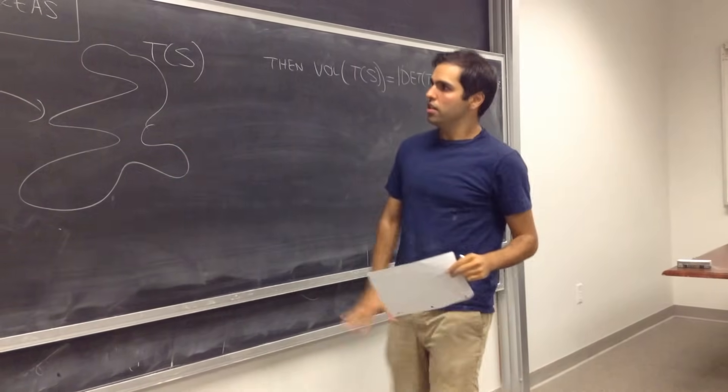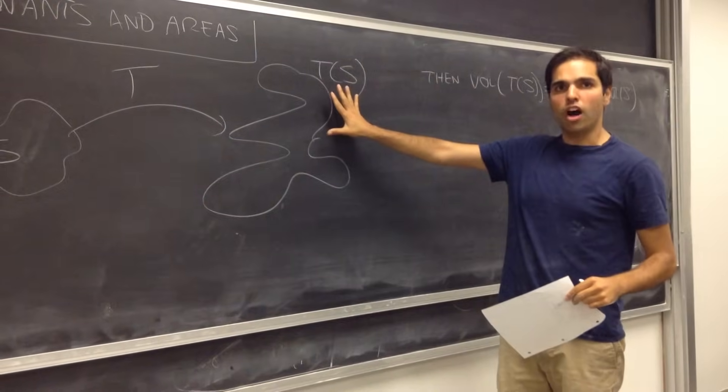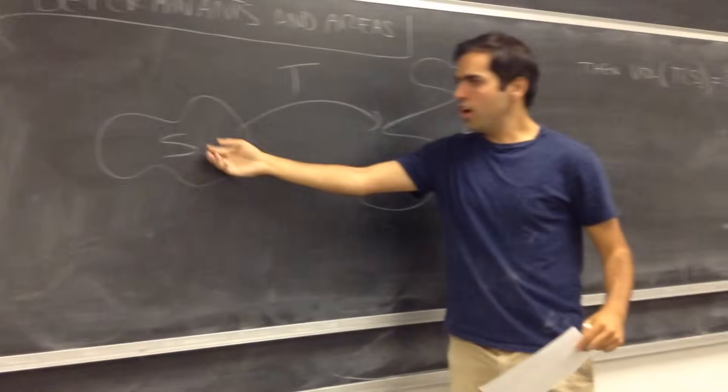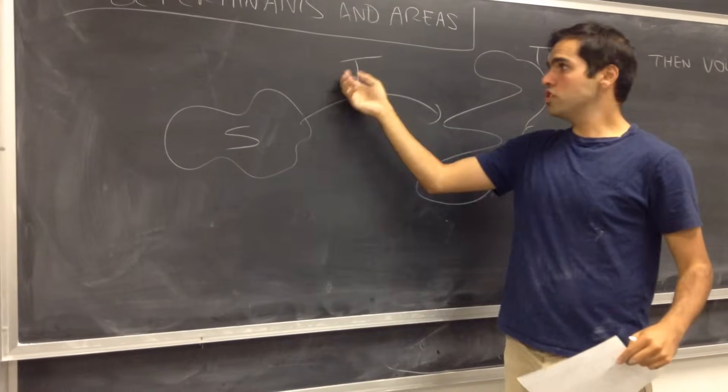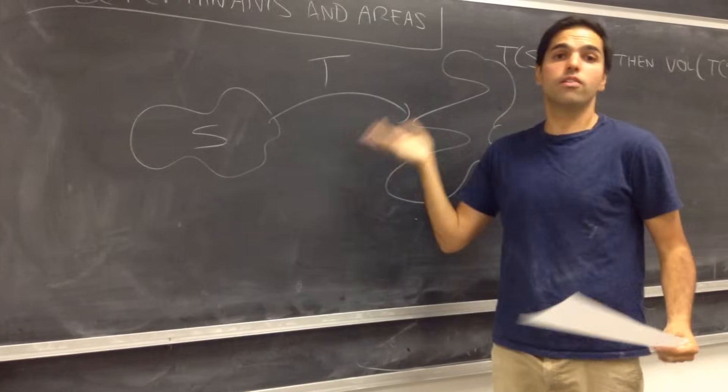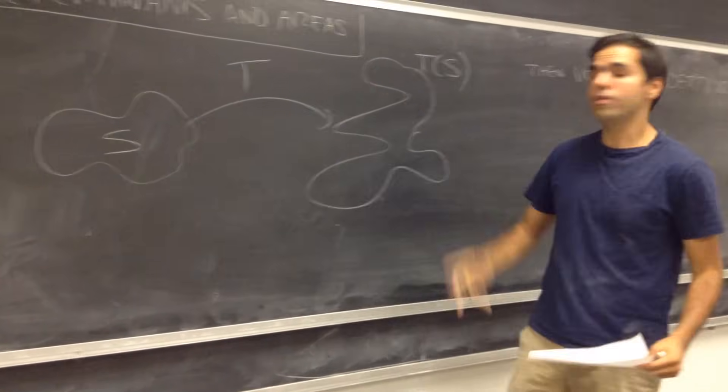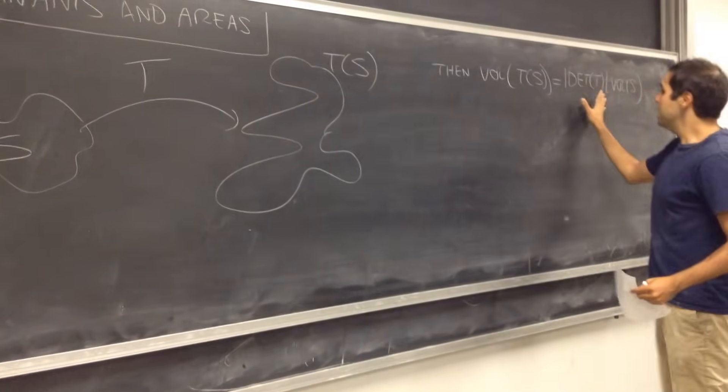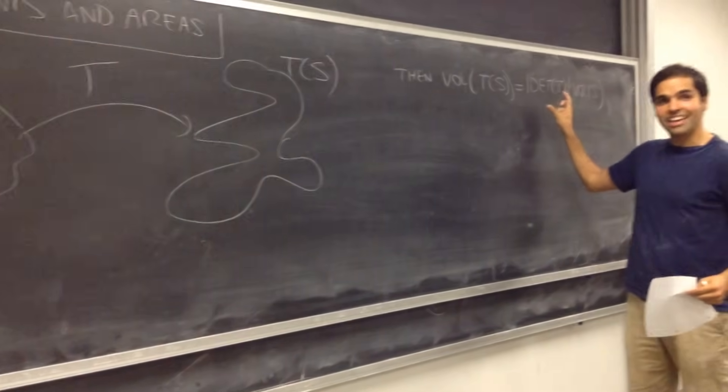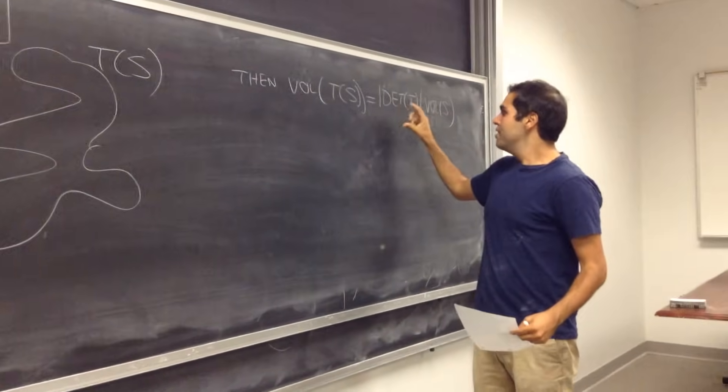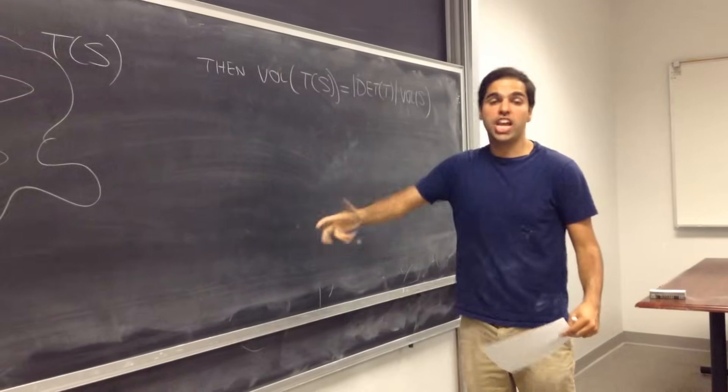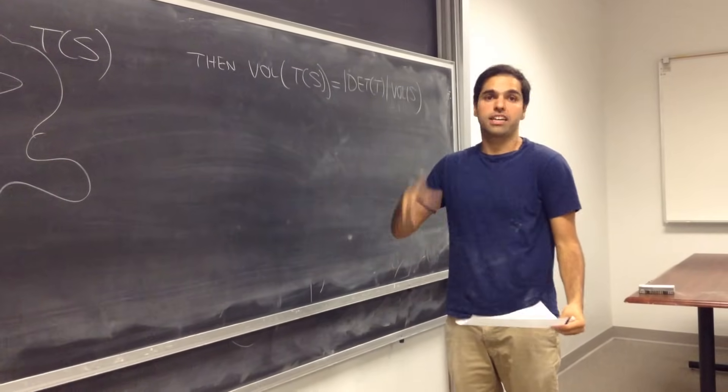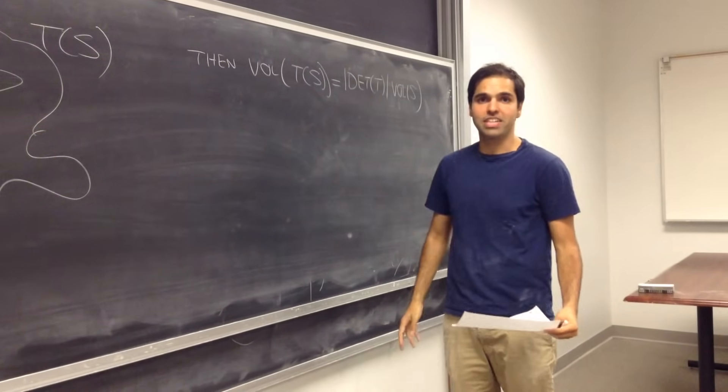Maybe then, the volume of T of S is just the absolute value of the determinant of T times the volume of S. In other words, to get the volume of the new object, you take the volume of the old object, and you just multiply it by the determinant of T, with an absolute value.